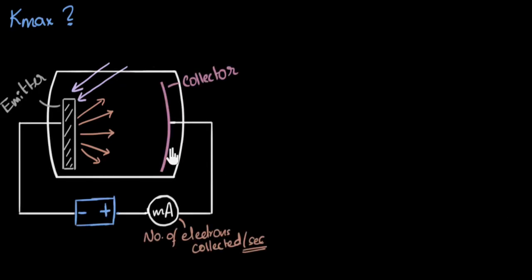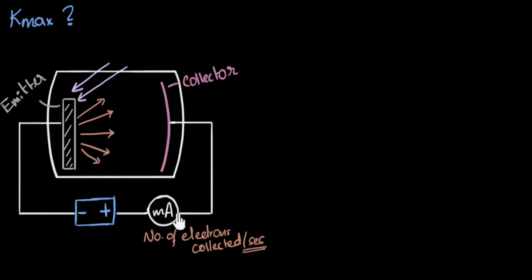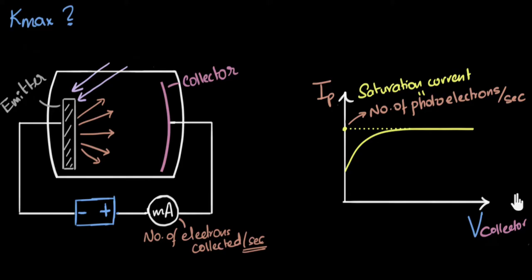To quickly recap, we've already seen the experimental setup used to count the number of electrons emitted per second. The number of electrons collected per second is a direct indicator of the current. But that did not necessarily mean the same as the number emitted per second, because some electrons can be lost. So we attached a battery to ensure the collector can suck all the electrons. As we increase the voltage, the current starts increasing and eventually maxes out. When the current has reached maximum, that's when we know almost all the emitted electrons must be getting collected. We call that the saturation current or max current.